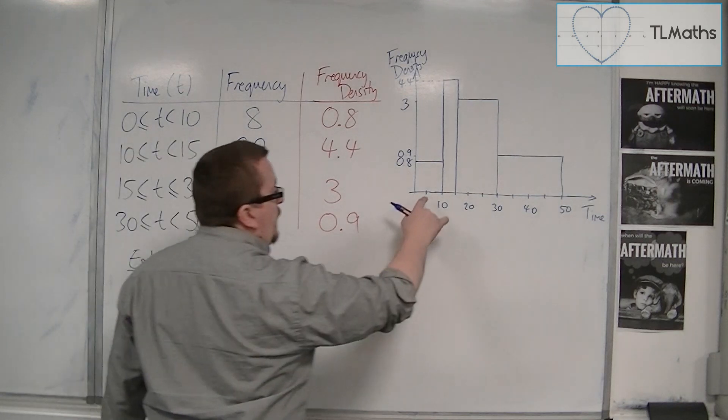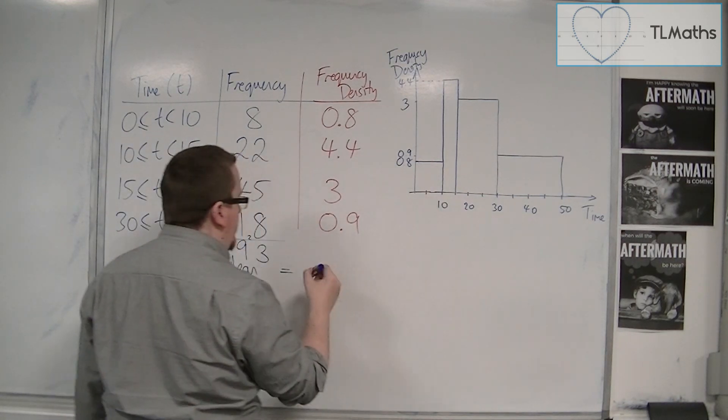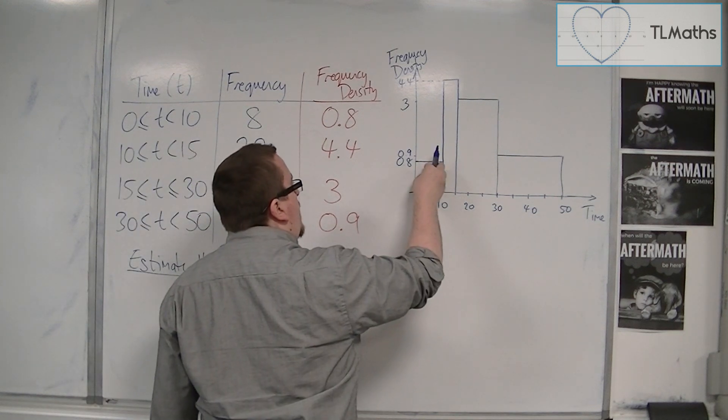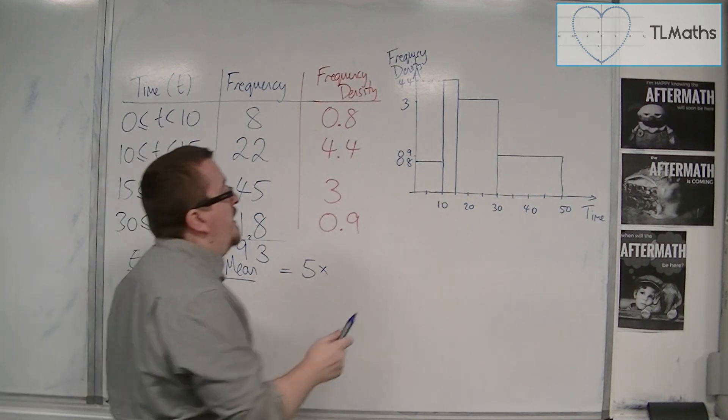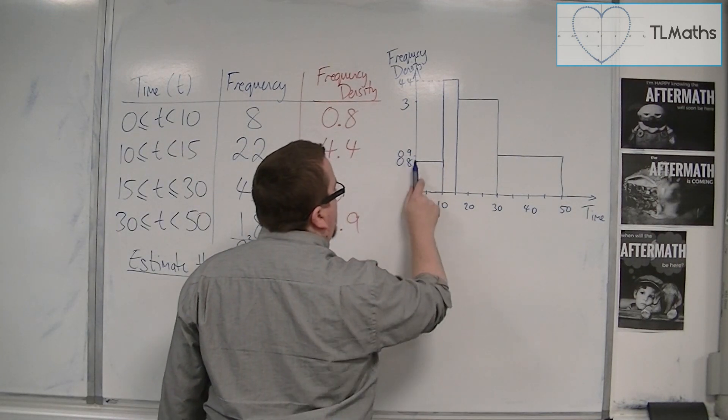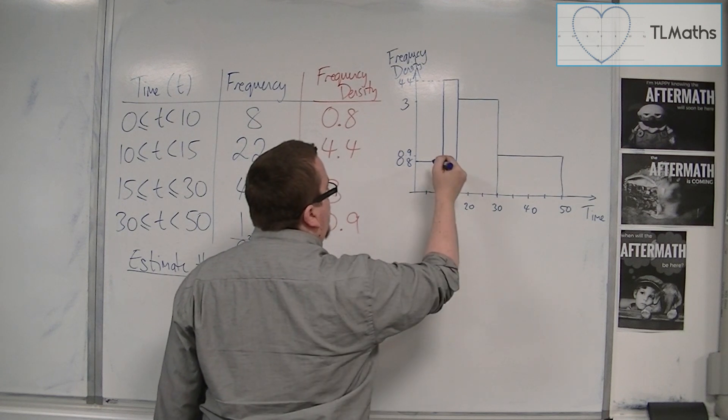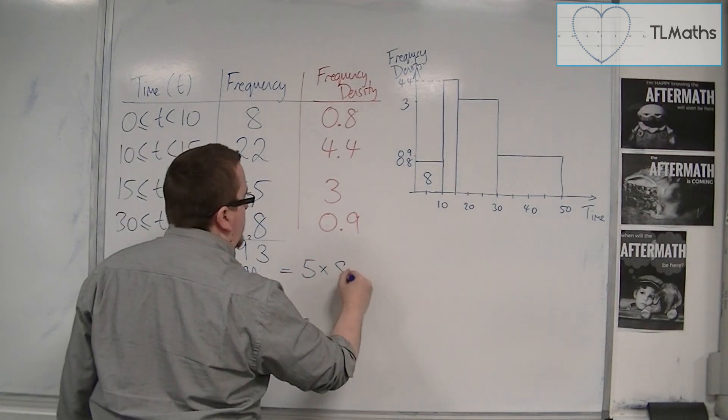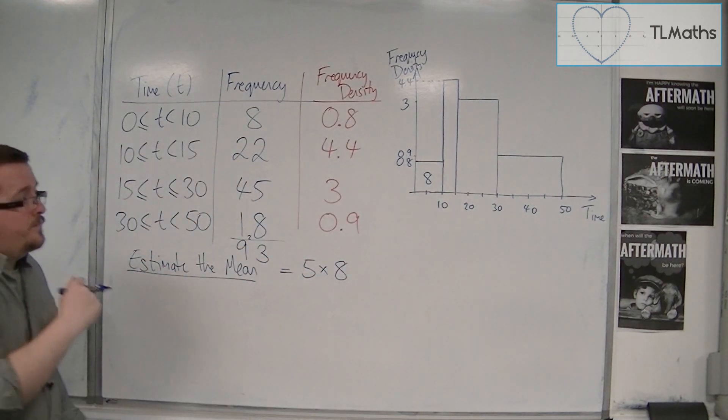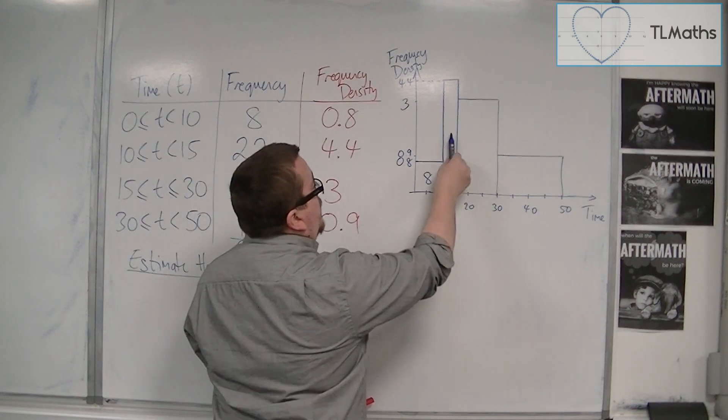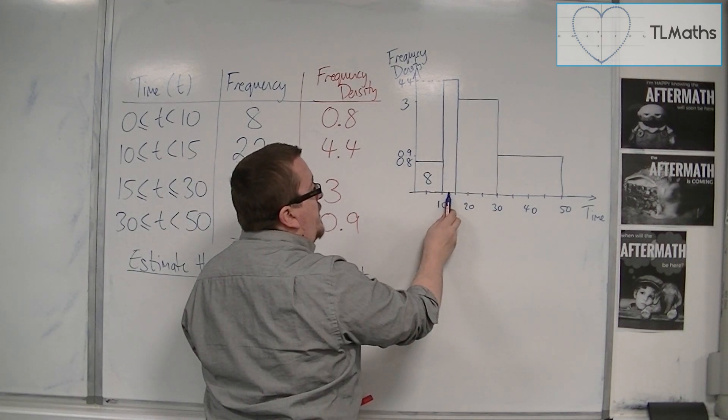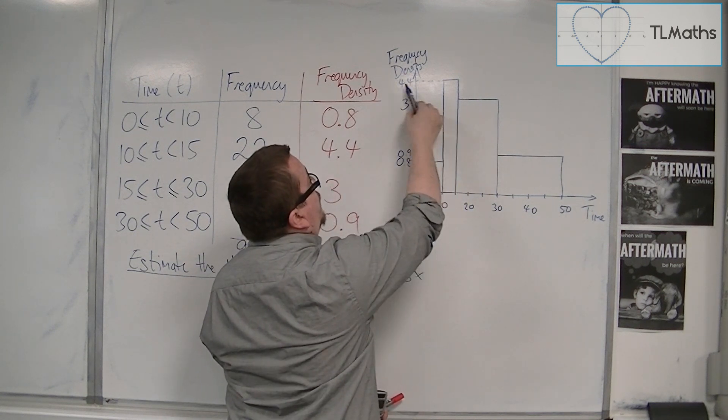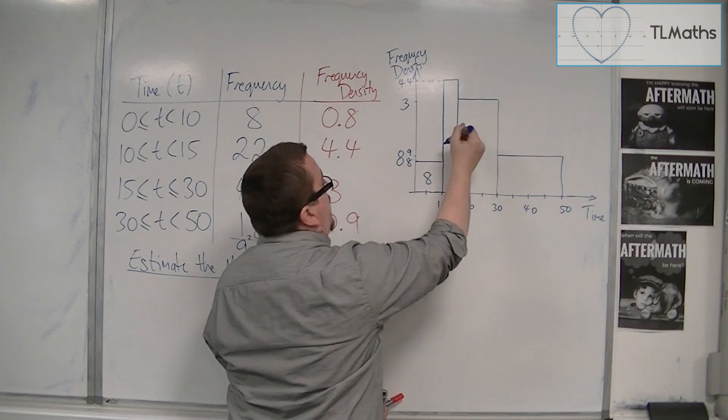So, what I would have is the midpoint of this bar, which is 5, multiplied by its frequency. Now, I know that it's 0.8, times by 10. So, effectively, this is a bar value 8. So 5 times 8. Plus, the midpoint of this bar, that's at 15. So this would be 12.5. Times by the value of that bar. So 4.4 times 5. Which gets me 22.